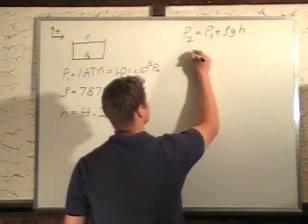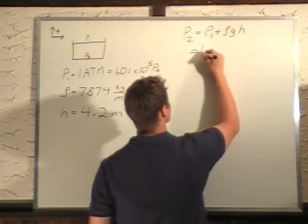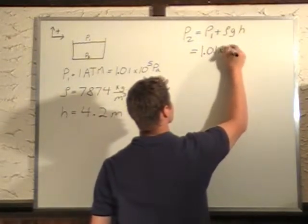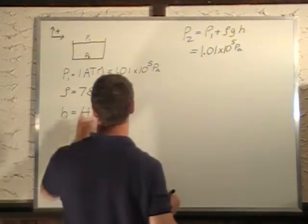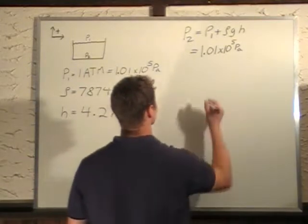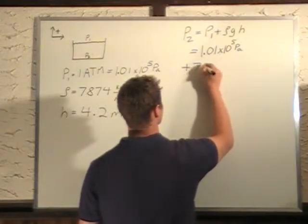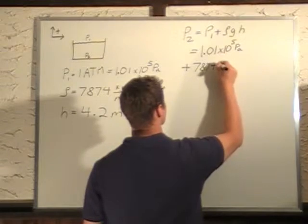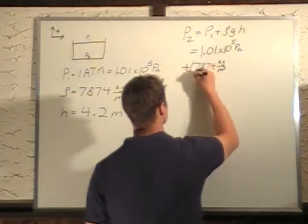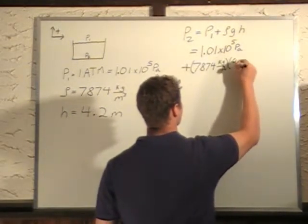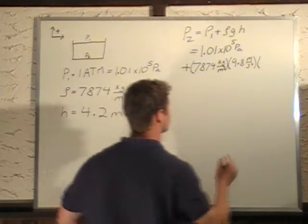So all I have to jump into the formula is pressure 1, 1.01 times 10 to 5 pascals. So we're going to add rho times G times H. So plus, I'll have to put this on a different line here, rho, which is 7874 kilograms per cubic meter times G of 9.8 meters per second squared and height of 4.2 meters.